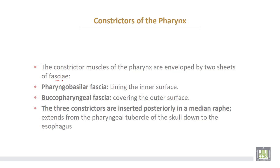The constrictors of the pharynx are enveloped by two sheets of fascia: the pharyngobasilar fascia lining the inner surface of the constrictors, while the parapharyngeal fascia covers the outer surface. The three constrictors are inserted posteriorly in a median raphe extending from the pharyngeal tubercle of the skull down to the esophagus.